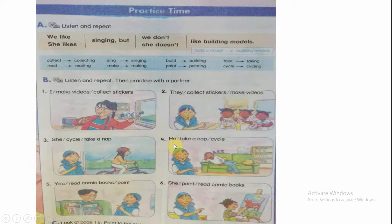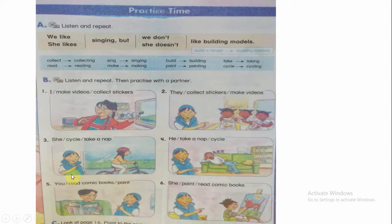Number four: He likes taking a nap, but he doesn't like cycling. Number five: You like reading comic books, but you don't like painting.